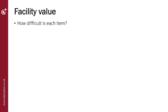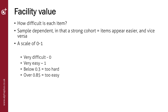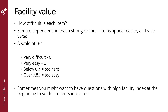The facility value or facility index is a measure of how difficult the item is. It measures how well the students who took the assessment performed, so it is very much dependent on the nature of the cohort. If it is mostly able students, the facility value will be higher and the assessment will appear easy; if mostly weaker students, the facility values will be lower and the assessment will appear harder. The scale is between 0 and 1, with 0 meaning no students scored any marks and 1 meaning all students scored full marks. Generally, you would want a facility value of between 0.3 and 0.85 for items. However, there may be times where you want an easy item at the start to settle students in and give them confidence, which would have a high facility value.